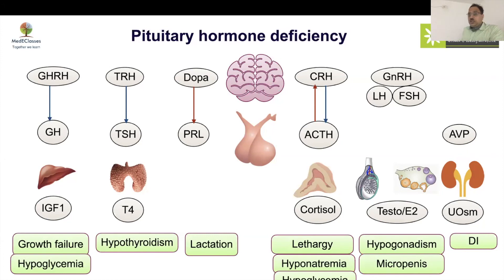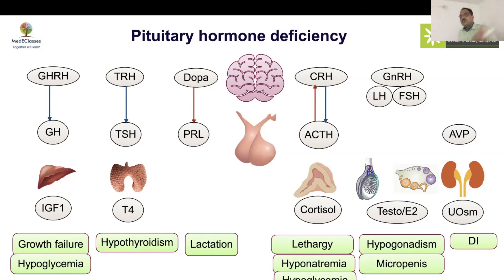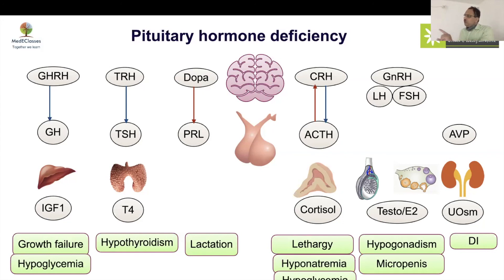Diabetes insipidus must also prompt evaluation for other pituitary hormone deficiencies, because its common causes — such as histiocytosis, tumors, or hypophysitis — affect the stalk and can also cause GHD and other deficiencies. Therefore, if DI is present, a full pituitary workup is required. The general principle is: any documented pituitary deficiency warrants evaluation for all other hormonal axes.